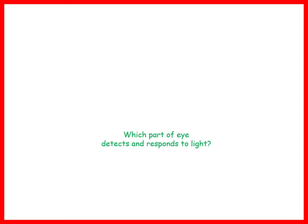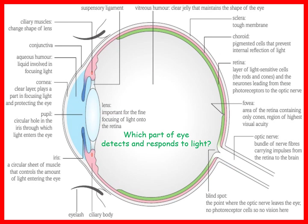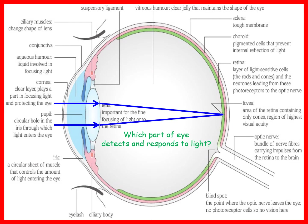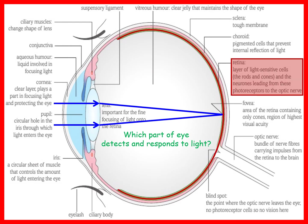The eye detects and responds to light. Light first passes through the cornea where it is refracted, through the pupil, and the change in lens shape causes fine tuning of refraction so light rays focus on the retina. The retina is the part that detects and responds to light. The retina contains two types of light-sensitive photoreceptor cells called rods and cones.